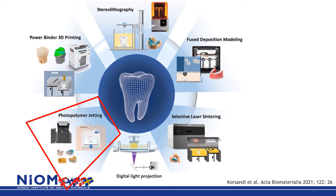Photopolymer jetting is also a photo-induced polymerization of liquid resin. However, this process does not use a vat or tank for the resin, but jets micro droplets of resin onto the build platform through inkjet print heads. The curing is done instantly using UV. One important advantage of this technique is that it may combine different resins with different shades in the print heads to create colored objects.